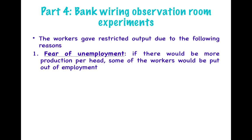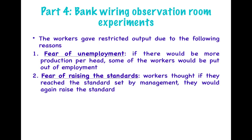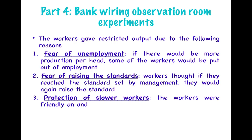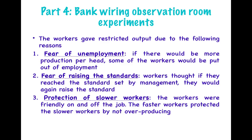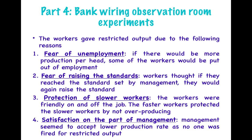Workers gave restricted output for four reasons. First, fear of unemployment — if they produced more per head, some workers or group members would lose their jobs. Second, fear that standards would be raised — if they reached the management target, management would raise it again. Third, to protect slower workers — faster workers restricted output so that slower workers would not be removed from their jobs. Fourth, management satisfaction with low production rates — since no one was fired for restricted output, workers felt no pressure to produce more.